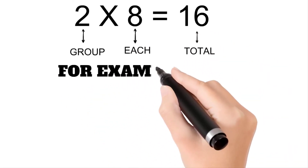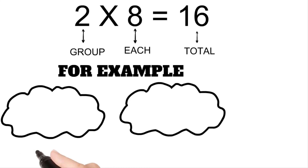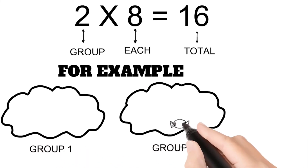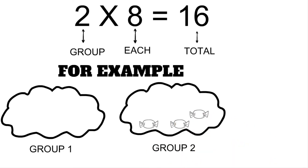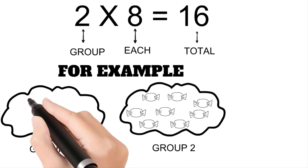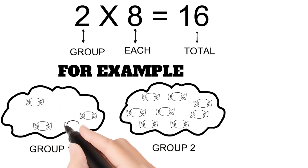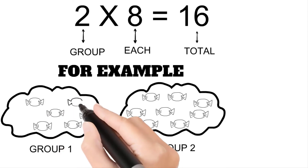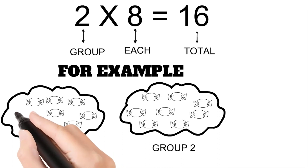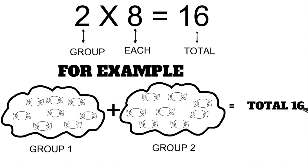For example, we have two groups — group one and group two. Group two has eight sweets, and group one also has eight sweets. When we add these two groups together, we will have a total of sixteen sweets.